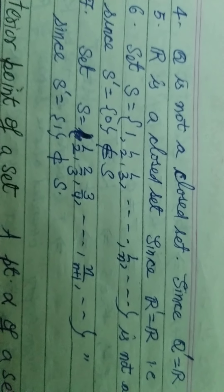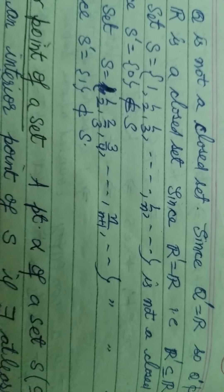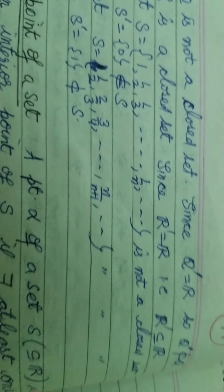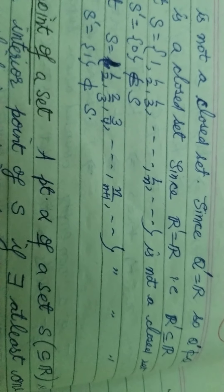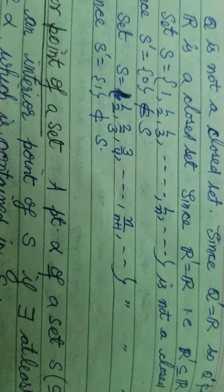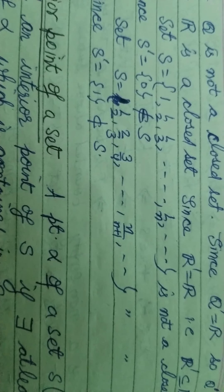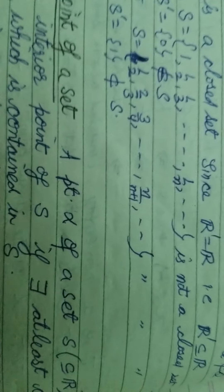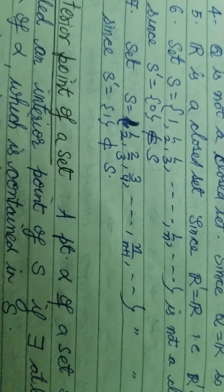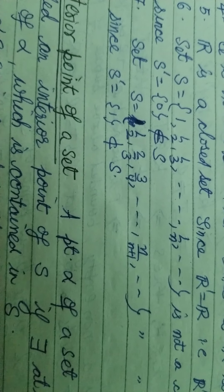The set of rational numbers Q is not a closed set because the derived set of Q is R. Since Q' = R is not contained in Q, Q is not a closed set — it is an open set. The set of real numbers R is a closed set because R' = R, and R is contained in R, so R is closed.